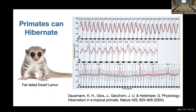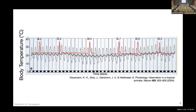I was so surprised when I looked at these charts in the paper. The red lines show the body temperature of these lemurs. They do keep their body temperature around 36 degrees in normal condition, as we do, because they're mammals. But once they enter hibernation, all of a sudden they keep their body temperature around 22 or 23 degrees — and that's a killing temperature for a human.